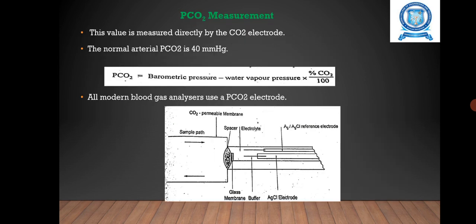PCO2 measurement. This value is measured directly by the CO2 electrode. The normal arterial PCO2 is 40 mmHg. It can be expressed as PCO2 = (barometric pressure - water vapor pressure) × (%CO2/100). All blood gas analyzers use a PCO2 electrode.